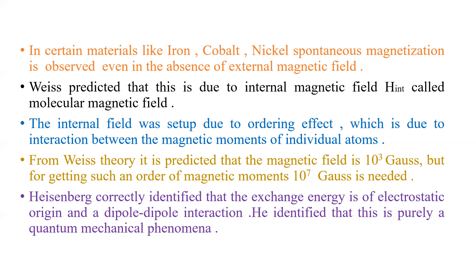Weiss theory predicted that the molecular magnetic field is 10³ Gauss. However, for getting such spontaneous magnetization in materials like iron, cobalt, and nickel, the magnetic field required is almost 10⁷ Gauss. So this theory's prediction does not meet the amount of magnetic field required, which is 10⁷ Gauss.